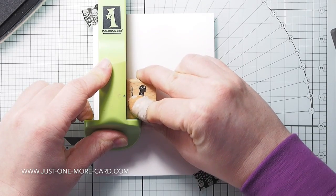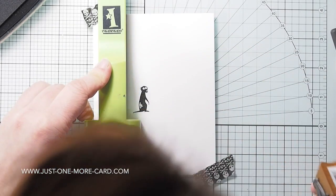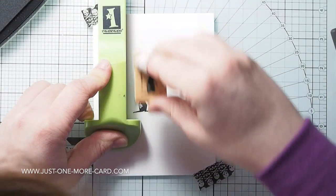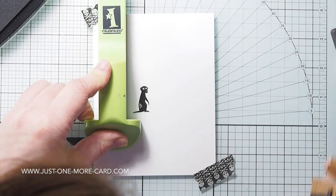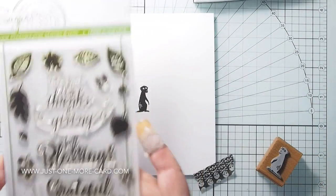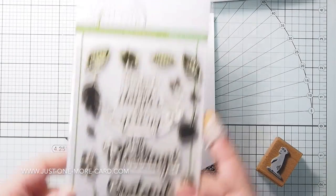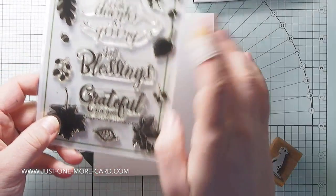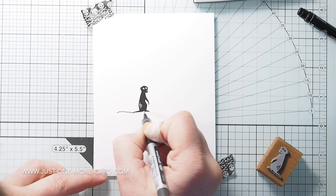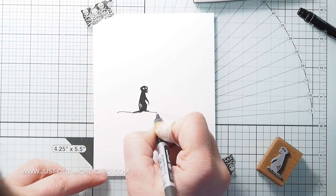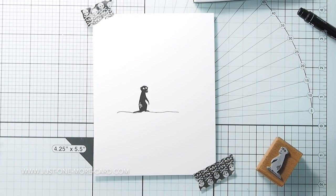For the second card, I'm starting out with the meerkat, stamping it as well with the VersaFine Onyx pigment ink. You could stamp them in brown, you could stamp them in blue or in red. I just like the stark contrast of the black. Then I grabbed this Sugar Pea stamp set, simply because it has some floral images which are solid and which I thought would go great with my landscape.